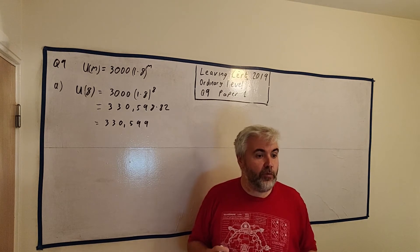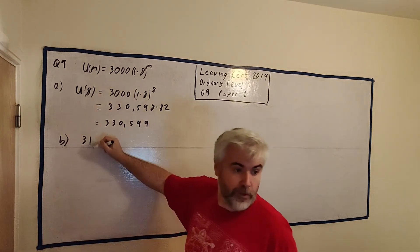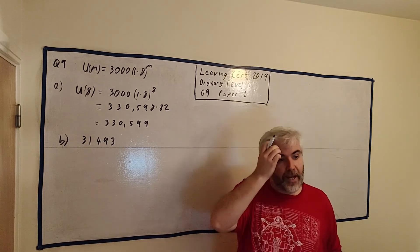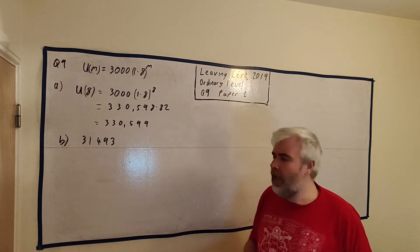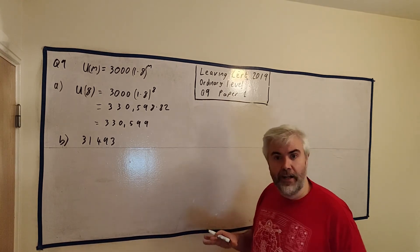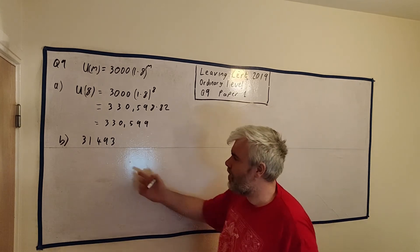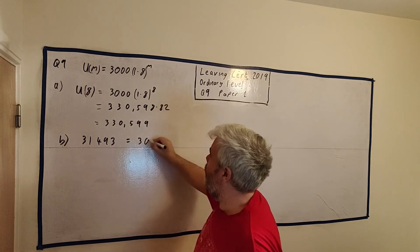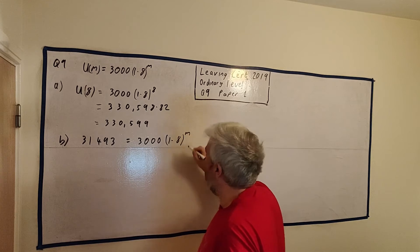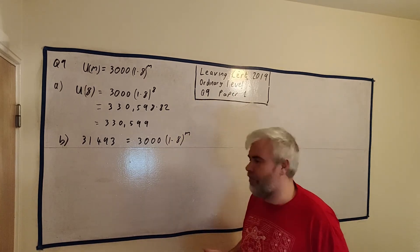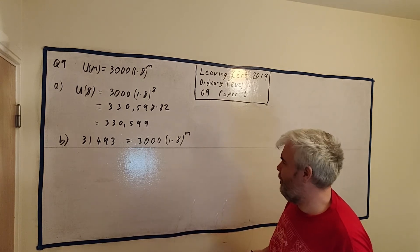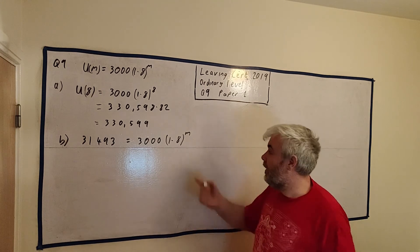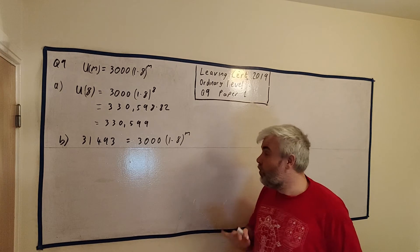Part B tells us there are 31,493 registered users at the end of a particular month and asks us to estimate how many users there will be one month later. Lots of people get this wrong or do a lot of unnecessary work. You might ask yourself what month you're in, solve 31,493 = 3000 × 1.8^m for m — finding m is about 4, then put in m = 5. But you don't need to do any of that.